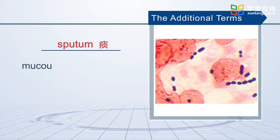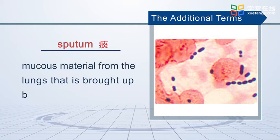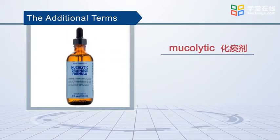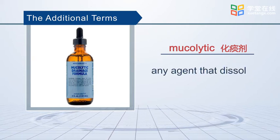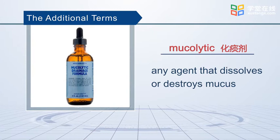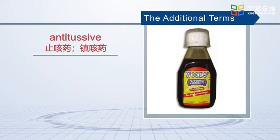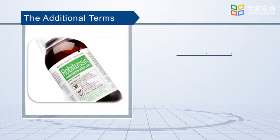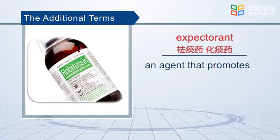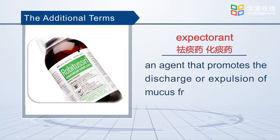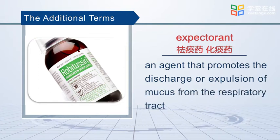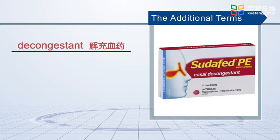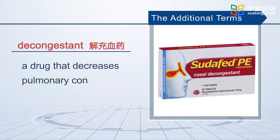Sputum is a mucus material from the lungs that is brought up by coughing. Mucolytic is any agent that dissolves or destroys mucus. Antitussive is a cough remedy to relieve cough. Expectorant is an agent that promotes the discharge or expulsion of mucus from the respiratory tract. Decongestant is a drug that decreases pulmonary congestion.